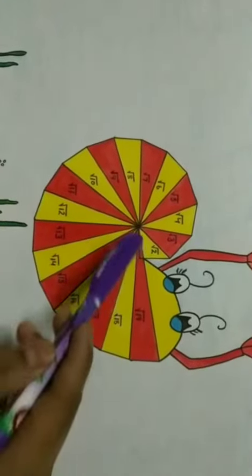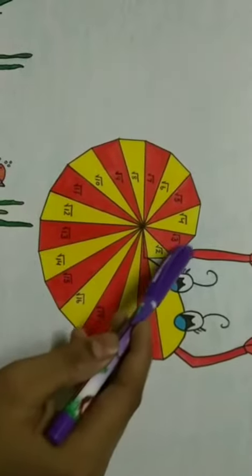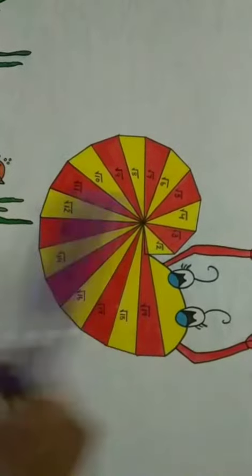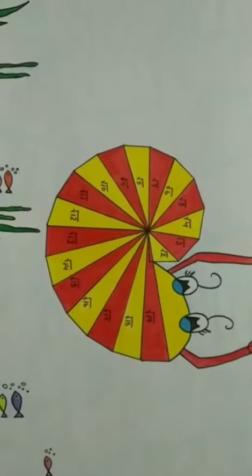Now, for the next triangle, we take root 2 as base, one unit as perpendicular, and again by Pythagoras theorem, we find the hypotenuse of this triangle as root 3.